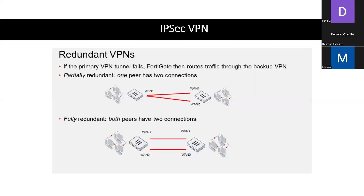Fully redundant is the exact opposite. In that hub and spoke setup, they both have primary and secondary connections — that's a fully redundant VPN.